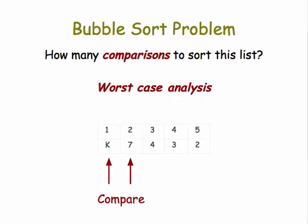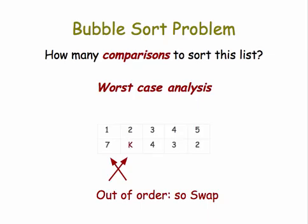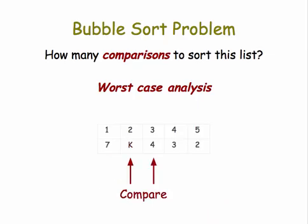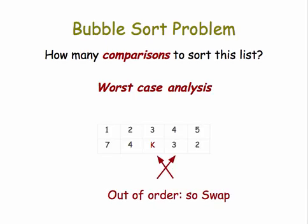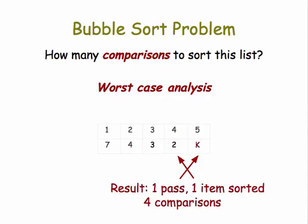First, we compare the king and the seven. They're out of order, so we swap them. Then we compare the king and the four, out of order, swap them. Then the king and the three, out of order, swap them. King and the two, out of order, swap them. So after one pass, the king has bubbled up to the top, and we've made four comparisons.